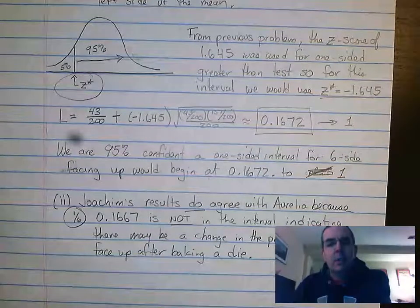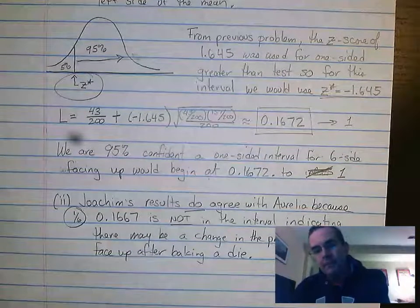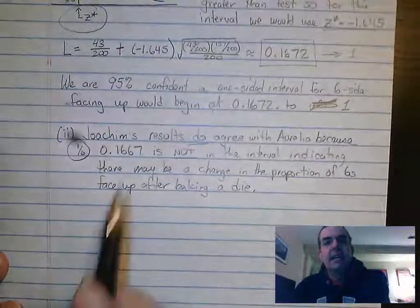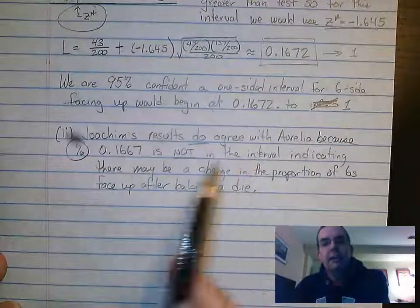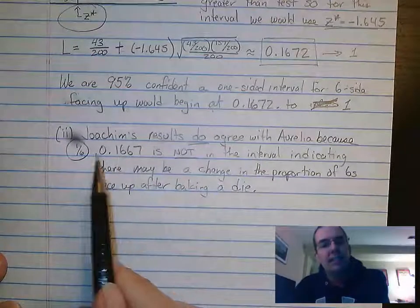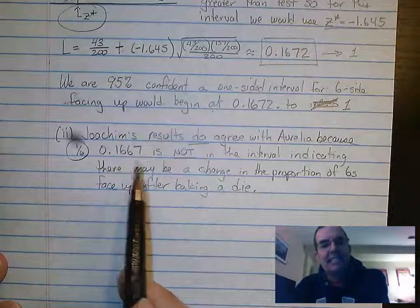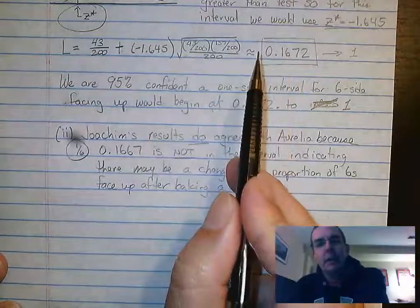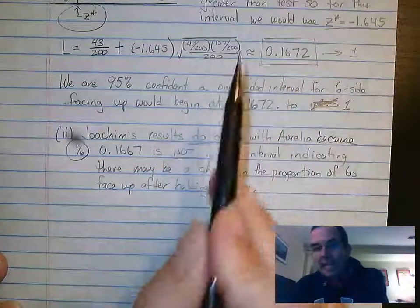Part B then says, does this agree with Irelia? And what we would have to say in this case is yes, it does agree with Irelia because that 0.1667 is not in that interval. It's below it. It's slightly below it, but it's not in it.